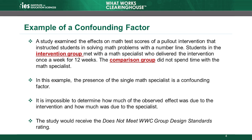Let's talk about a simple example to help illustrate the definition of a confounding factor. A study examined the effects on math test scores of a pull-out intervention that instructed students in solving math problems with a number line. Students in the intervention group met with a math specialist who delivered the intervention once a week for 12 weeks, during which the specialist showed the students how to solve math problems with a number line. The comparison group did not spend time with the math specialist. The WWC considers this design to have a confounding factor because a single individual, the math specialist, administered the intervention.